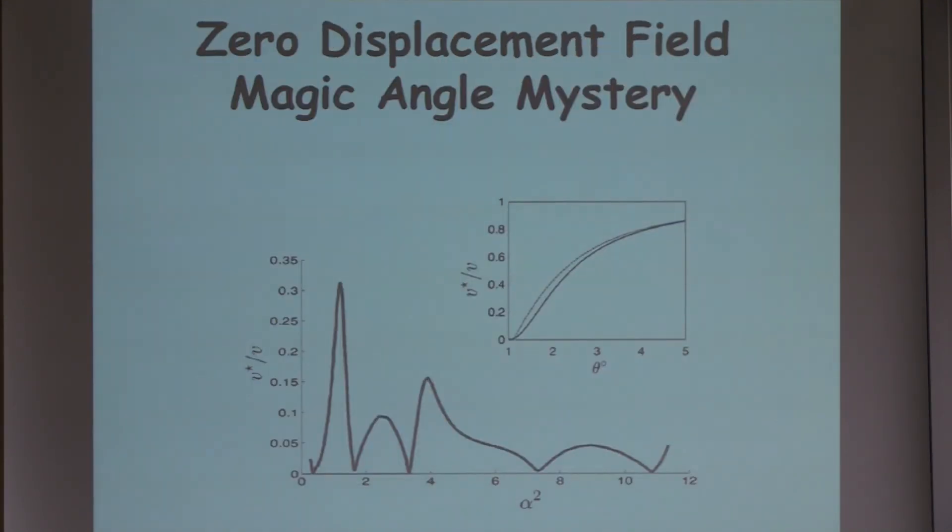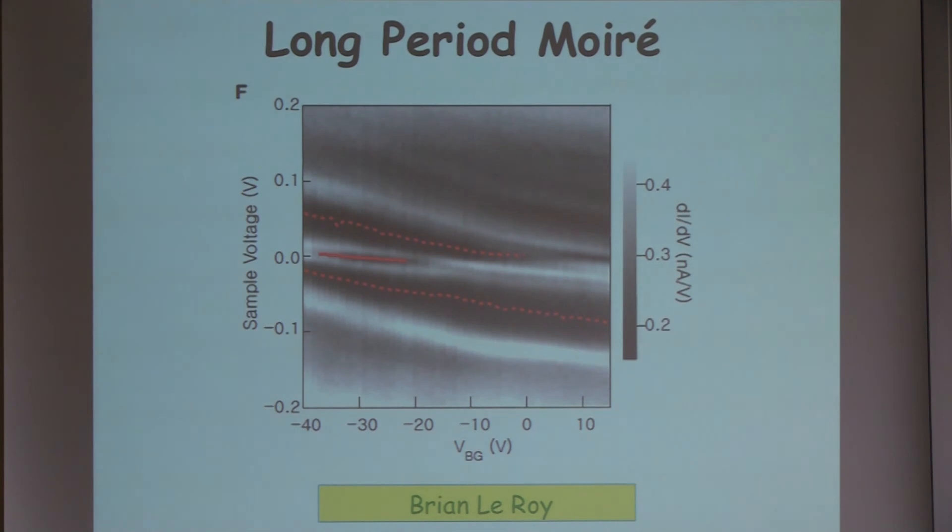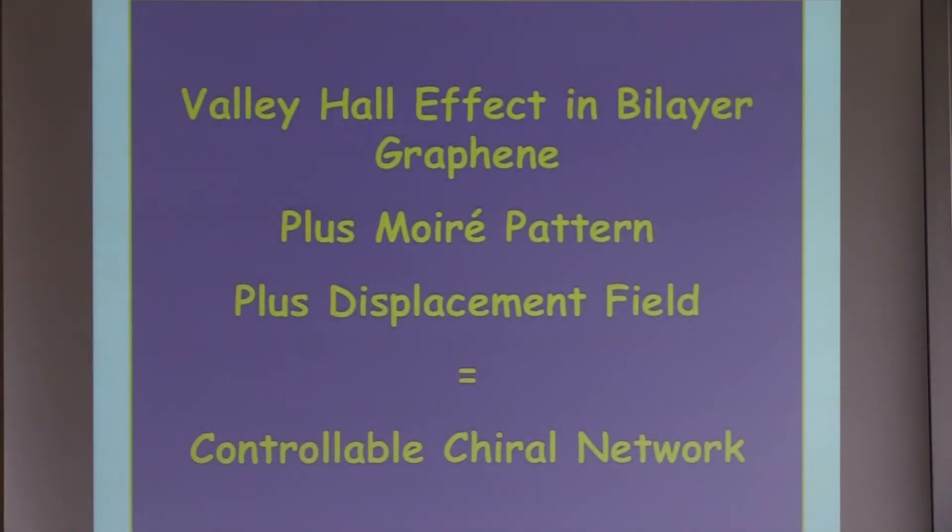Let me just say that all of this gets much more complicated if you don't have a displacement field between the two layers. There are many things that we calculate from this model that we don't understand, that seem like they should have a simple explanation, but we can't figure it out. Also, experiments that Brian has done, published earlier this year in PNAS, without a displacement field, the more complicated situation, show that there are very strong many body effects in these systems once you get to small twist angles, probably associated with Hubbard-like correlations associated with the states near these AA points. There are interesting things in magnetic fields. I'll just leave you with this summary slide. Thanks very much.